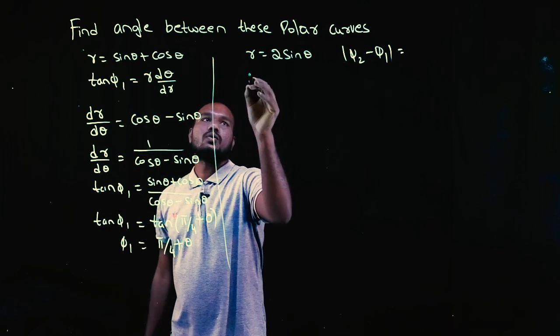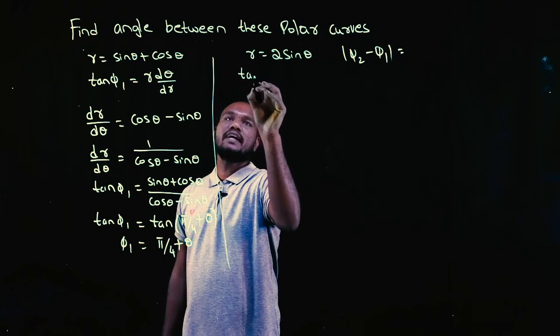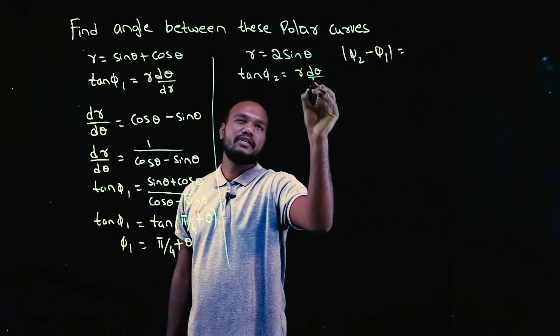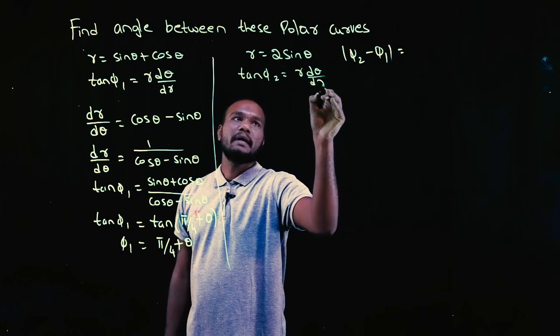Let's go to the next curve. r is given, so we have to find phi 2. To find phi 2, we need tan phi 2. So tan phi 2 is again r into d theta by dr.